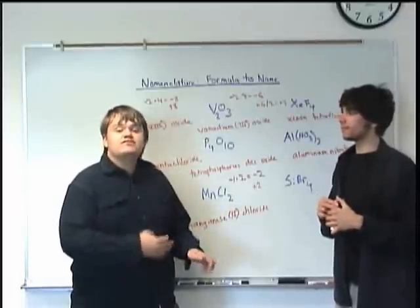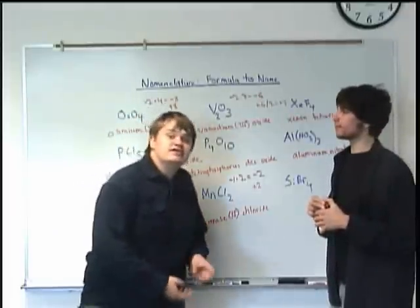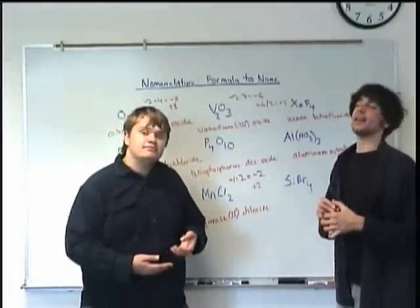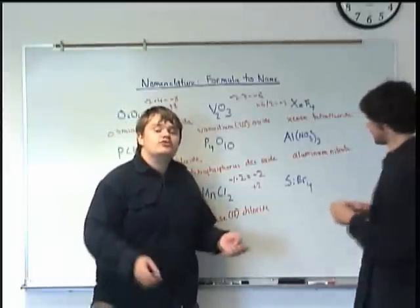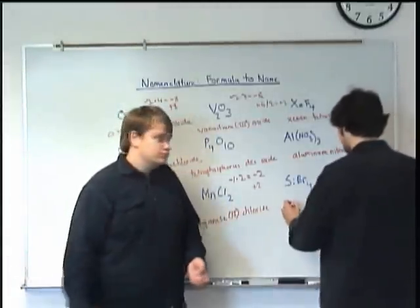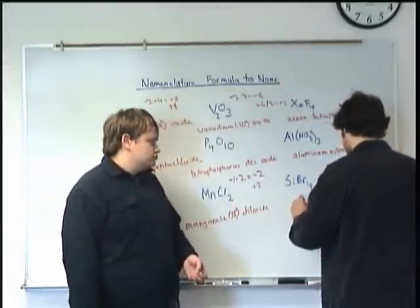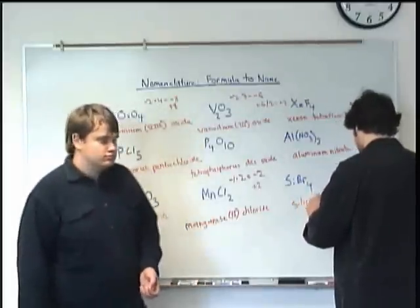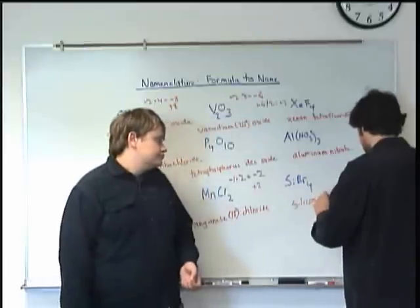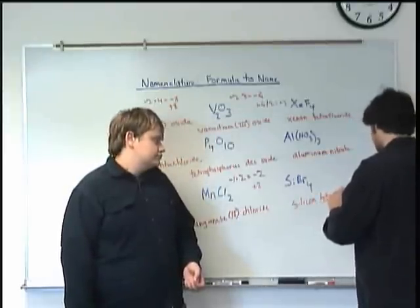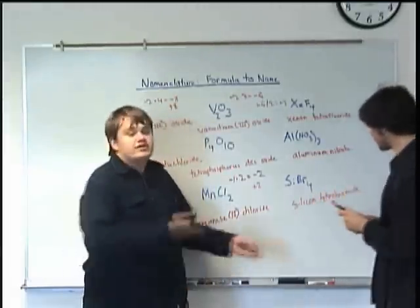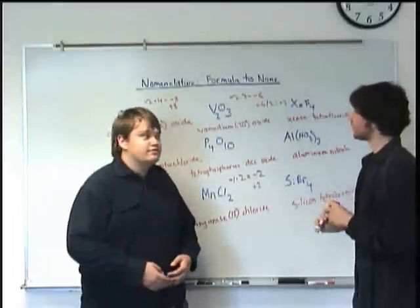For the intents and purposes of naming, we treat metalloids as if they are non-metals to name them. Oh, okay. And so you're just going to use the regular prefix system. So we'll have silicon tetra, so there's four bromines, tetra bromide. That's right, just like that, just like a regular covalent compound.